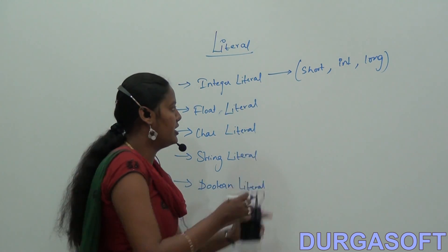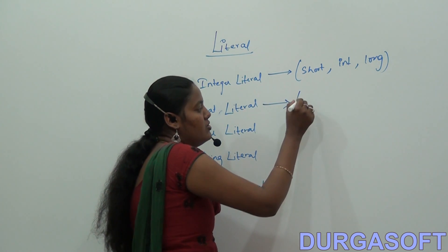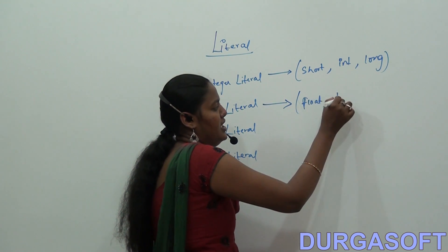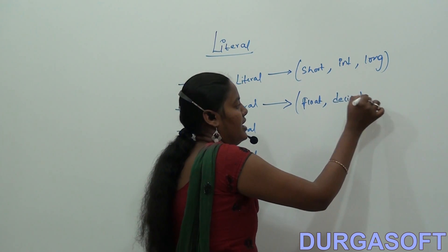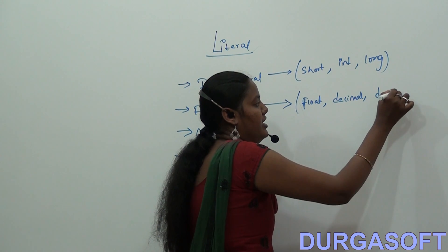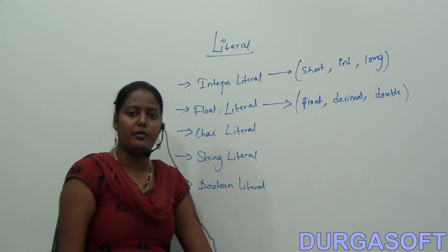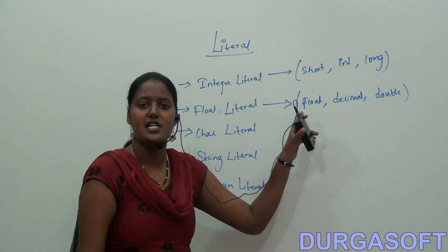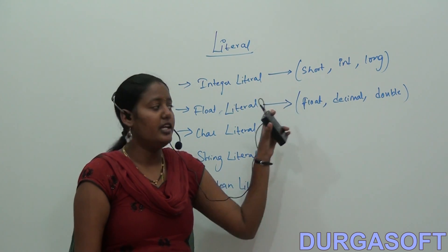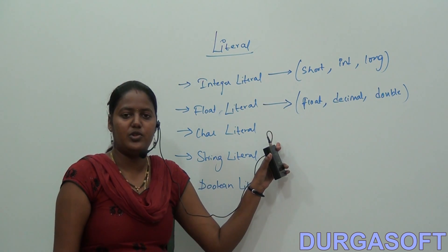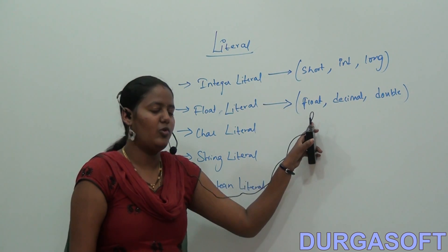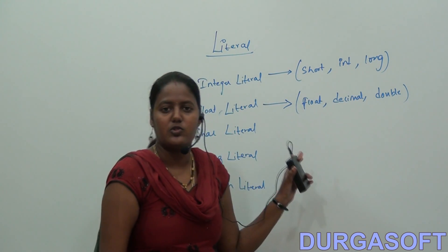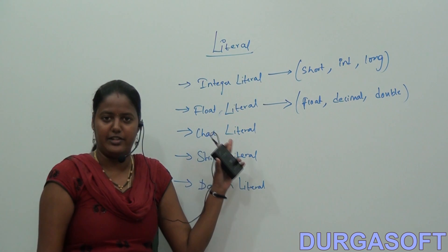The next one is float literal. Float literals include float, decimal, and double data types. Here we can put normal numeric values as well as decimal values. A constant value assigned to float, decimal, or double data type is called a float literal.